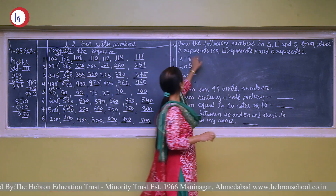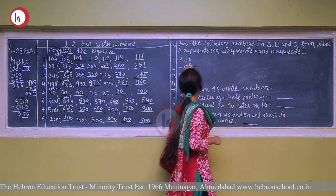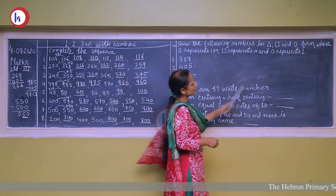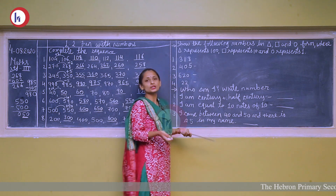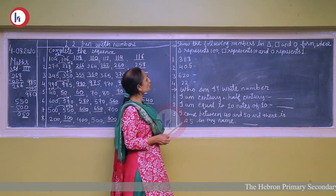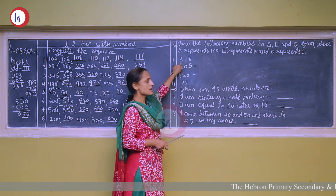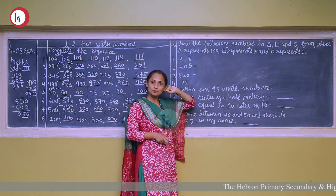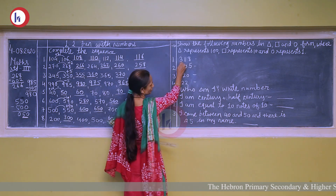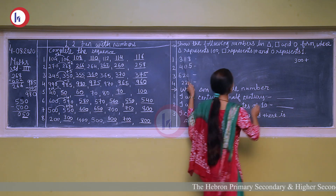Now our next question is: show the following numbers in triangle, square, and circle form, where triangle represents 100, square represents 10, and circle represents 1. This is a different way to show numbers. First, here it is a three-digit number because three digits are there. You all know the place value: three is in the hundreds place, one is in the tens place, and eight is in the ones place. We will write the expanded form: 300 plus 10 plus 8.